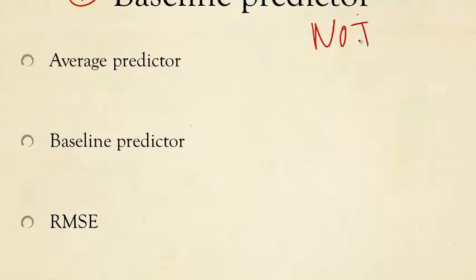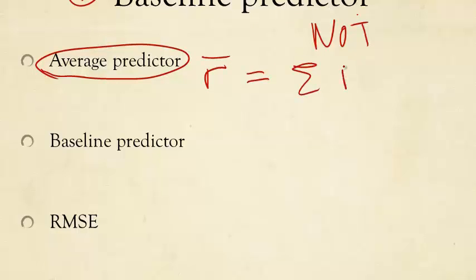We're going to start the baseline with the baseline of the baseline. That's the laziest predictor you can think of, the average predictor. Let's call that R-bar. R-bar is simply the summation of all the R-UIs across all the UI pairs where there is a rating, divided by the total number of such ratings. That's it. It's simply the average.